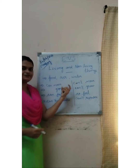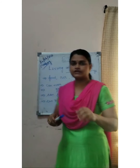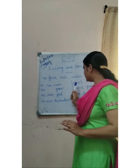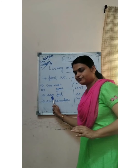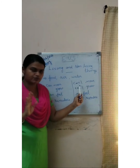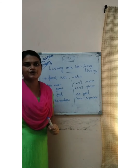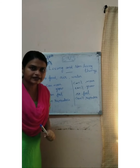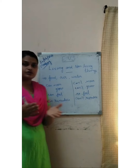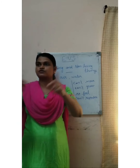So these are the differences between living things and non-living things. Living things can move, living things can grow, they can feel, and they can reproduce. Non-living things can't move, they can't grow, they have no feeling, and they can't reproduce their young ones. This is the difference between living things and non-living things.